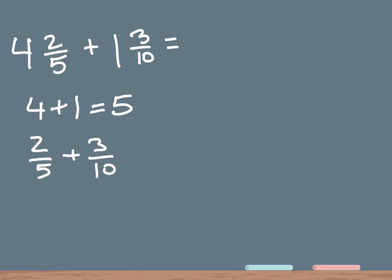We're going to add the fraction portion, but in order to add fractions we have to have a common denominator, which means the bottom numbers have to be the same. So we're going to take 5 times 2 to get to 10, giving us a common denominator. Whatever you do to the bottom of the fraction, you have to do the same thing to the top as well. So we're going to take 2 times 2 as well. Let's rewrite our problem.